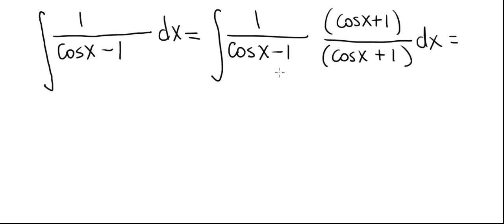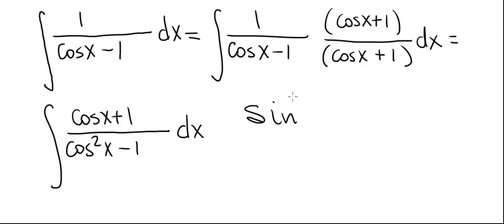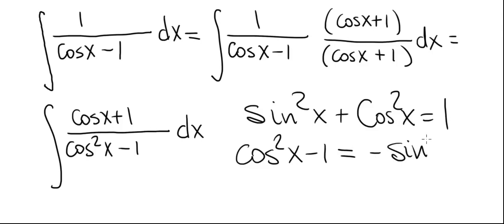So this now becomes the numerator is cosine of x plus 1 and the denominator is cosine squared x minus 1. We go to the identity sine squared x plus cosine squared x equals 1. We see that cosine squared of x minus 1 equals minus sine squared of x.